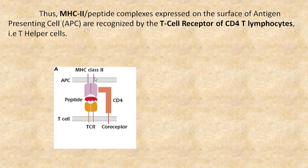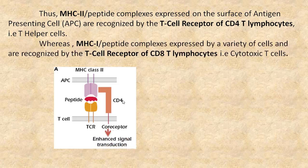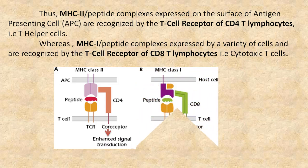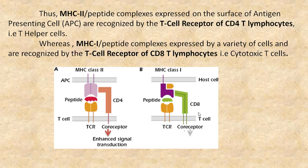MHC class 2 peptide complexes expressed on the surface of antigen presenting cells are recognized by the T cell receptor of CD4 lymphocytes, that is, T helper cells. Whereas MHC class 1 peptide complexes expressed on a variety of cells are recognized by the T cell receptor of CD8 T lymphocytes, that is, cytotoxic T cells.